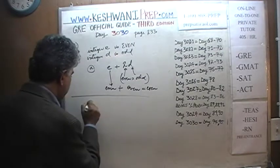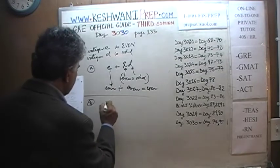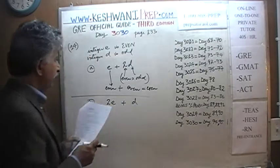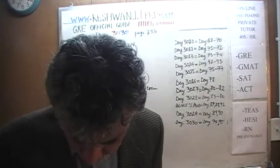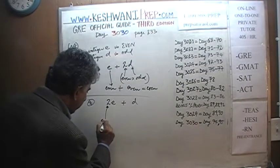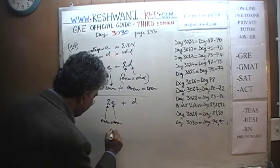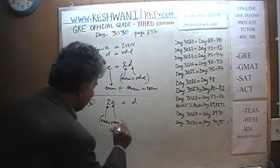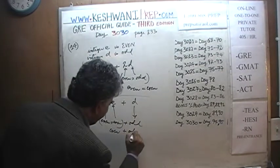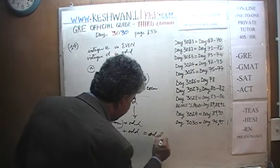Part B says: 2×E + D — 2 times some even quantity plus some odd quantity. 2 is even, and even times even is even. So we have even plus some odd quantity. Even plus odd — for example, 2 plus 3 is 5 — gives odd. The answer is odd.